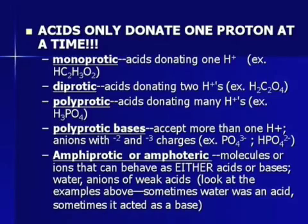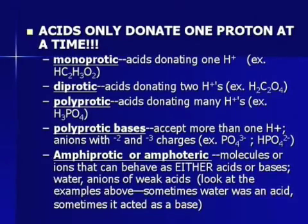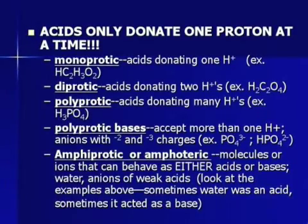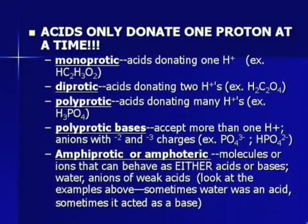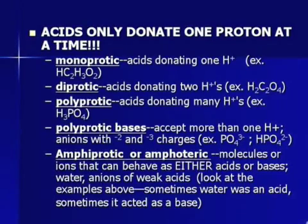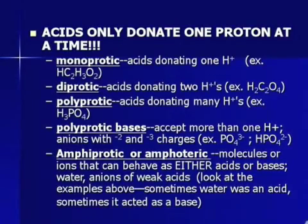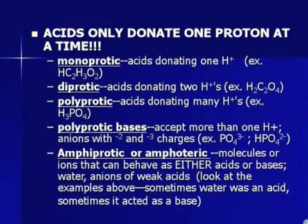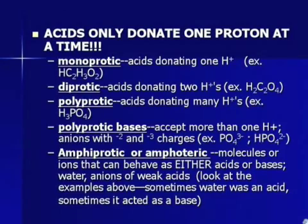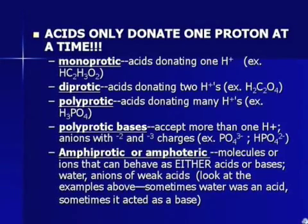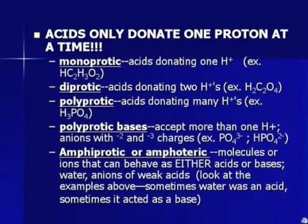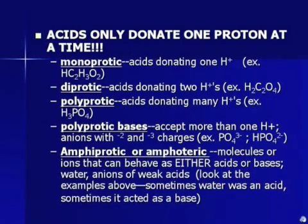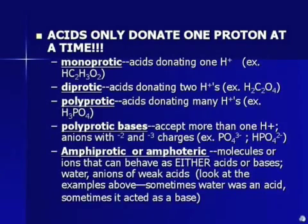Okay, acids only donate one proton at a time. It's very important that you understand that even the ones that have more than one hydrogen at the beginning, they can only donate one at a time. You cannot do two or three at one time. Some terms you need to know. Monoprotic means an acid donating only one hydrogen. It only has one available hydrogen to donate. We'll focus mainly on these. Diprotic means acids donating two hydrogens. Something like H2C2O4, you could donate both of those hydrogens. Polyprotic means many H+'s. Something like H3PO4 can donate three hydrogens one at a time.